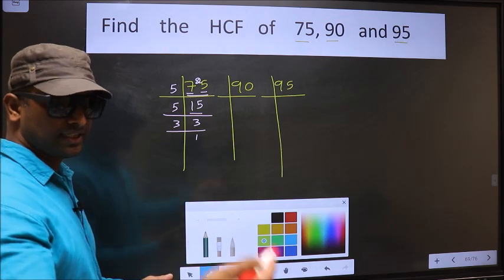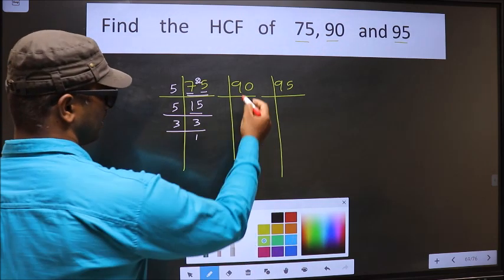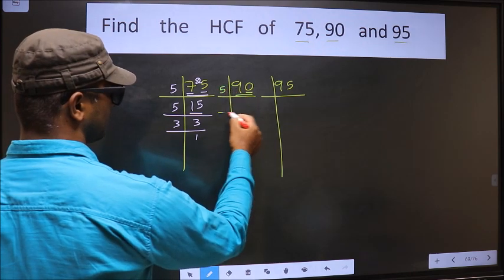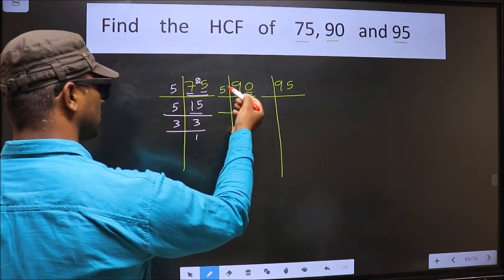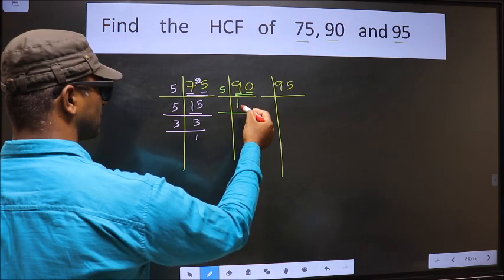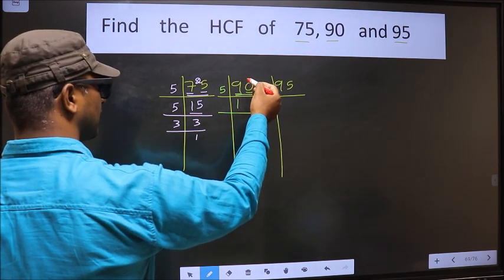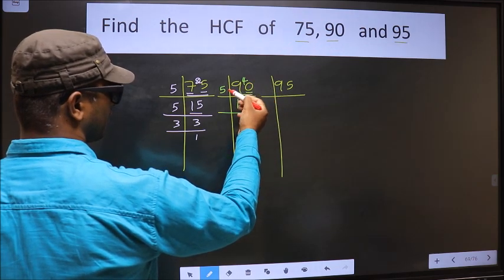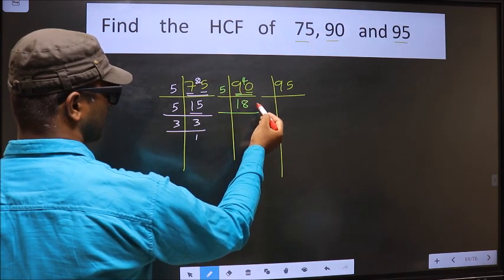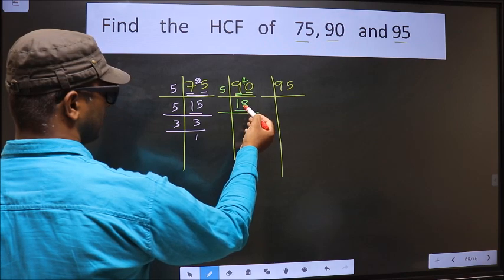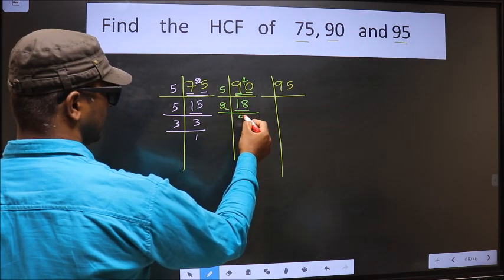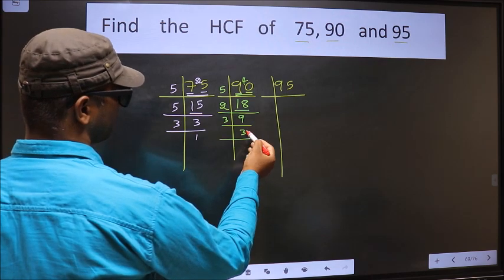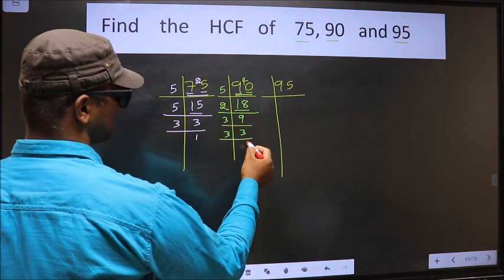Now the other number, 90. Last digit 0, so we take 5 here. The first number 9 — a number close to 9 in the 5 table is 5 once 5. 9 minus 5 is 4, carried forward making it 40. When do we get 40 in the 5 table? 5 eights is 40. Now here we have 18 — 18 is 2 nines. 9 is 3 times 3. Now 3 is a prime number, so 3 once 3.